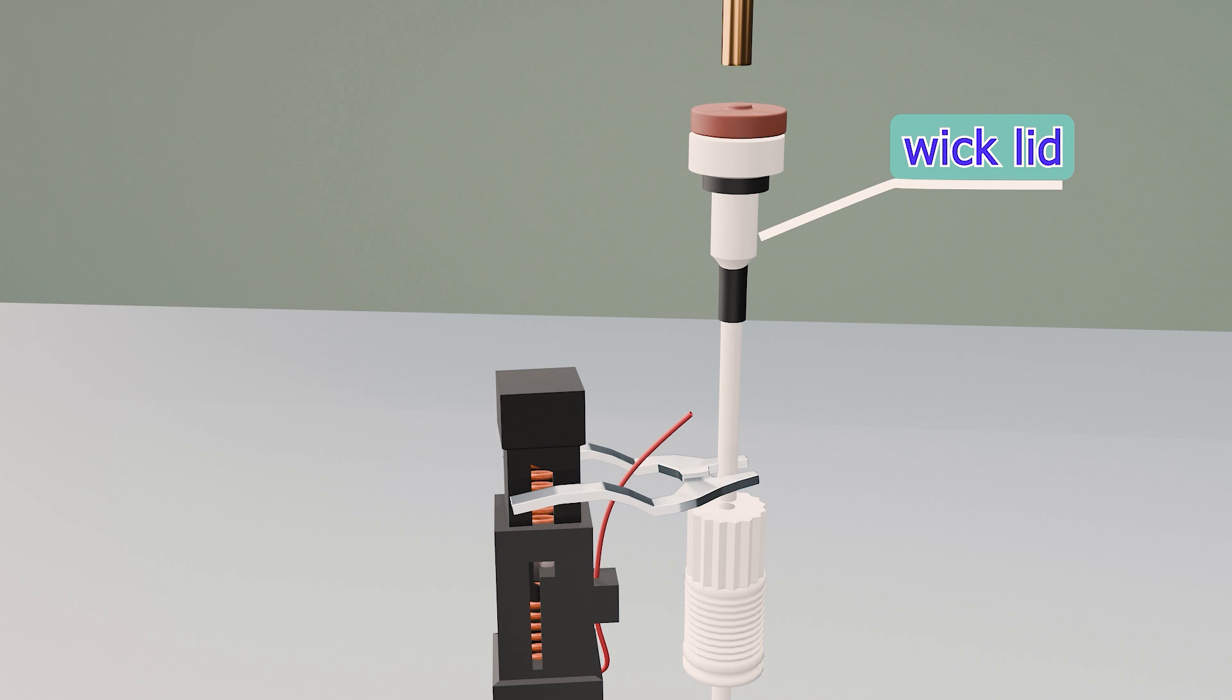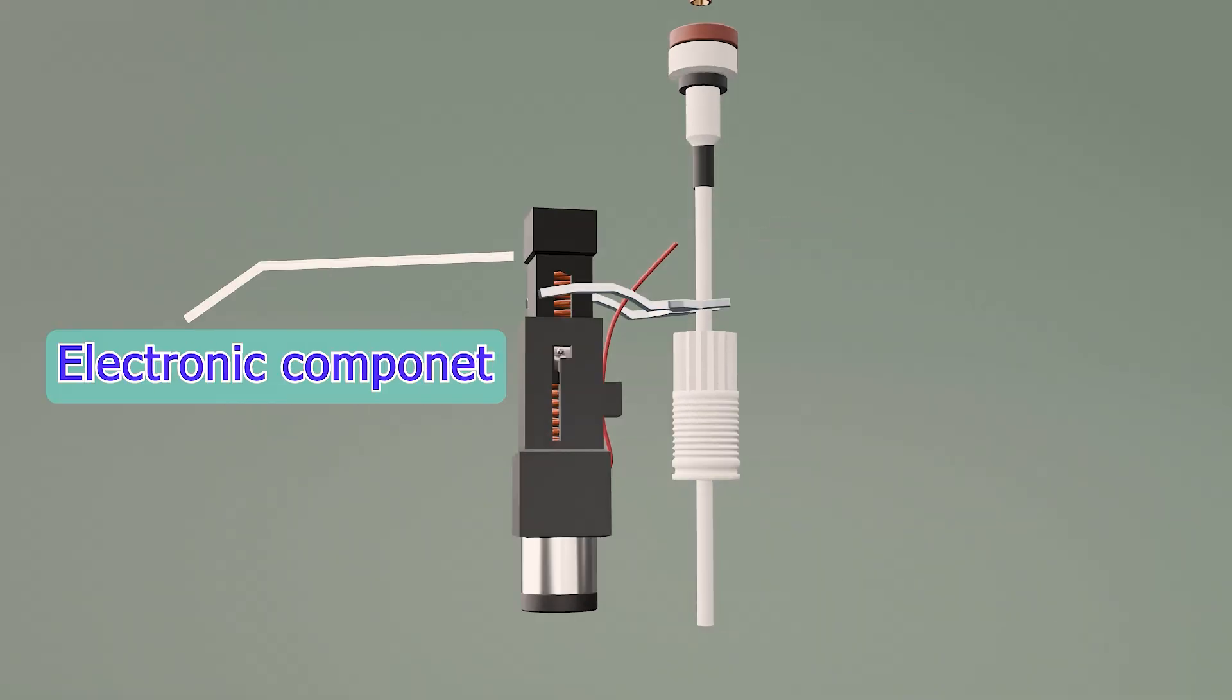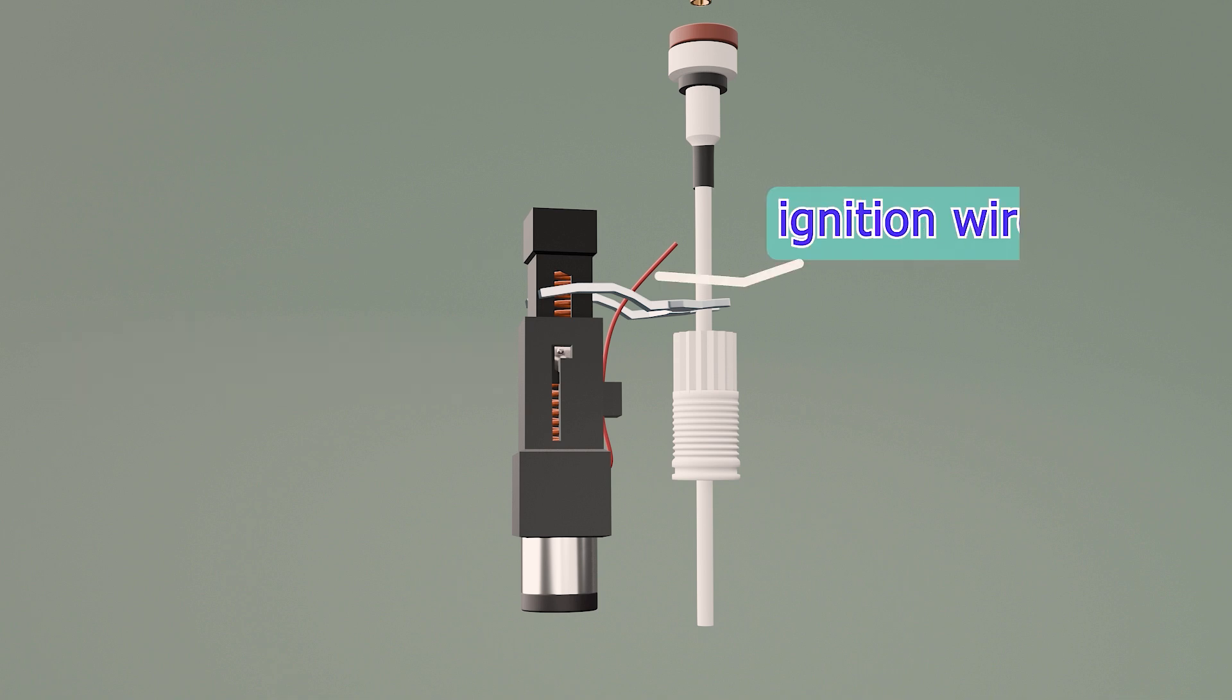Wick absorbs fuel and sustains the flame. Electronic component works with the ignition system to create a spark. Ignition wire helps in generating the spark for ignition.